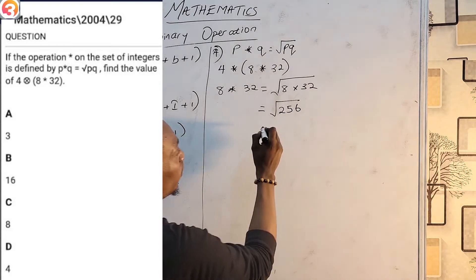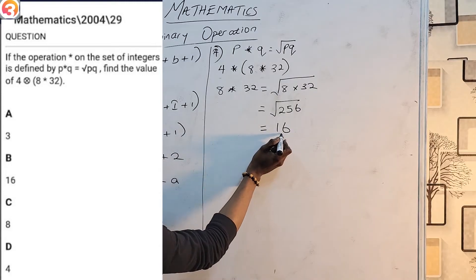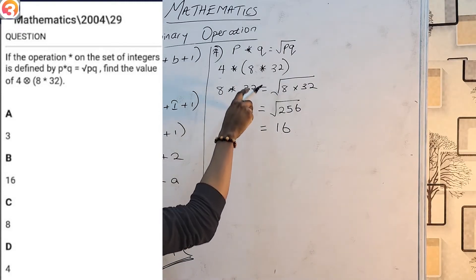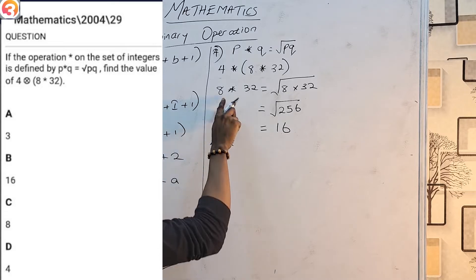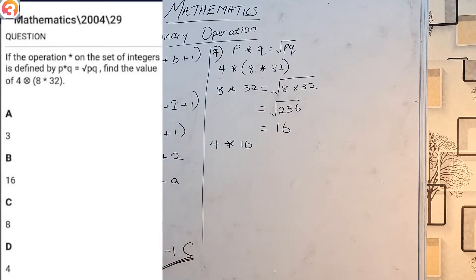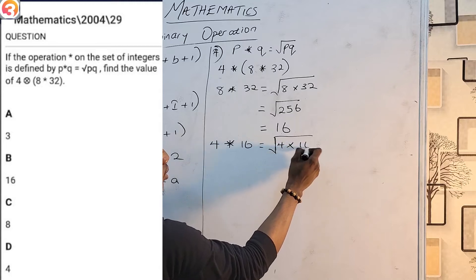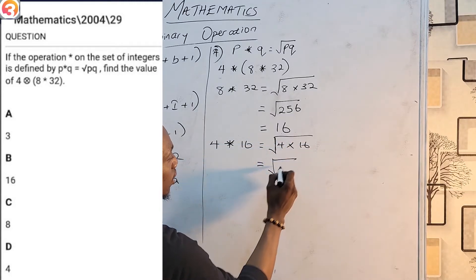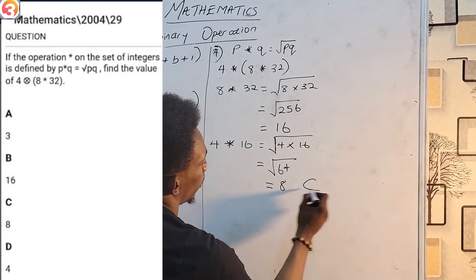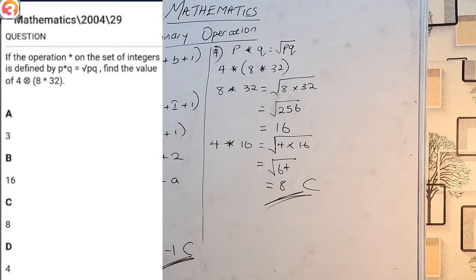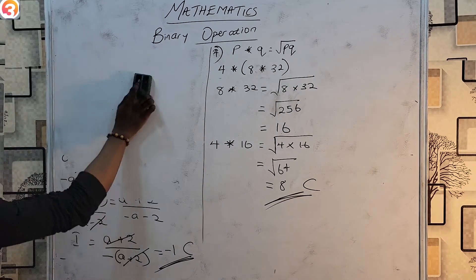Now that I know the bracket gives 16, I solve 4★16: √(4 × 16) = √64 = 8, and that is option C. Binary operation is very simple — one of the easiest topics in mathematics.